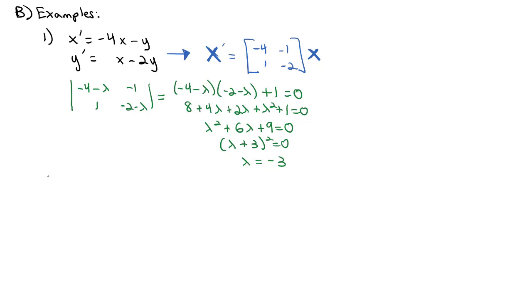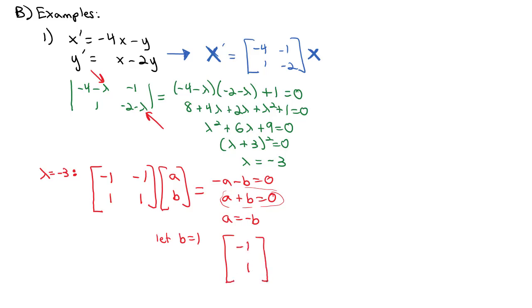So we can find the eigenvector at negative 3. If lambda equals negative 3, plugging that in, we get negative 1, negative 1, 1, 1, times our eigenvector ab, which gives us negative a minus b equals 0 and a plus b equals 0. Solving, we get a equals negative b. So if I let b equal 1, a would be negative 1, so my eigenvector is negative 1, 1. That's all what we did before.